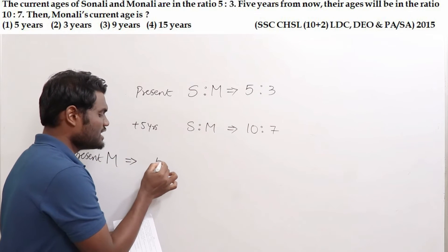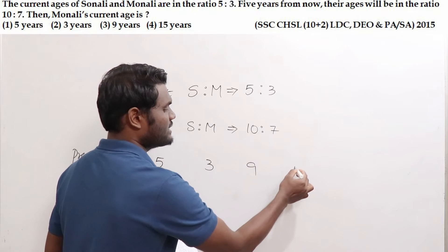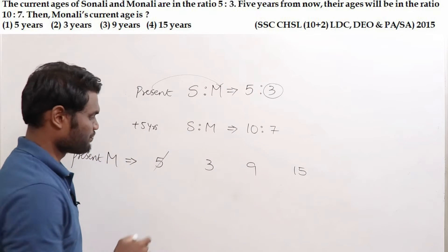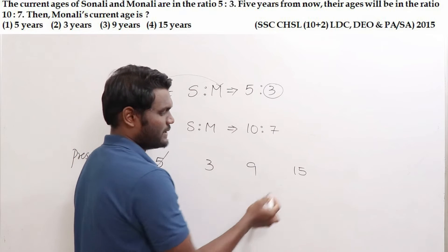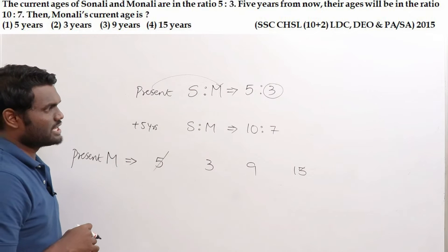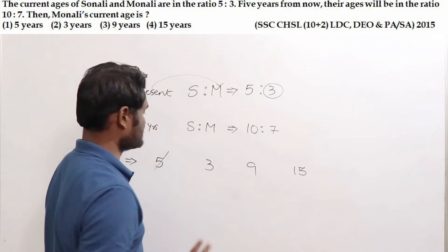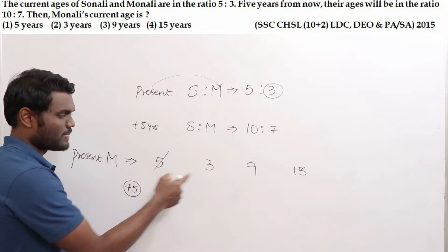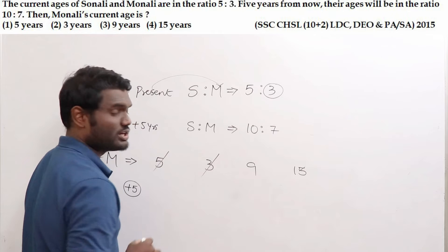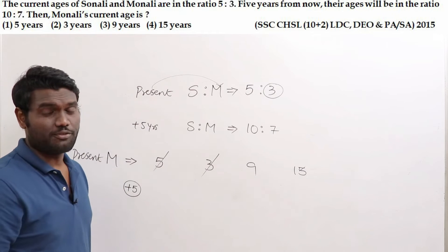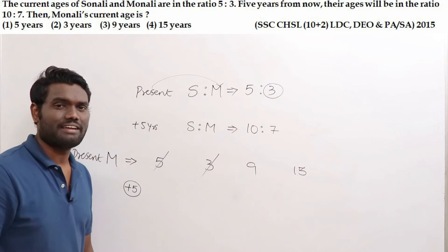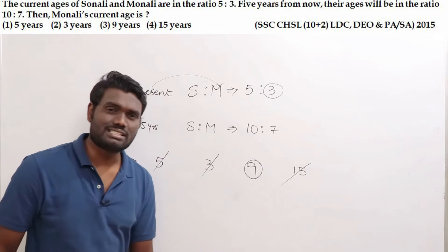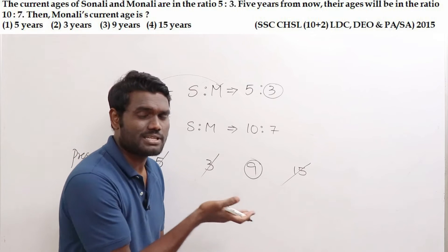The options for Monali's age are 5, 3, 9, and 15. Monali's age should be a multiple of 3 — 5 is not, so 3, 9, or 15 remain. After 5 years, Monali's age should be a multiple of 7. 3+5=8, not a multiple of 7 — wrong. 9+5=14, a multiple of 7 — correct. 15+5=20, not a multiple of 7 — wrong. So Monali's age is 9 years.